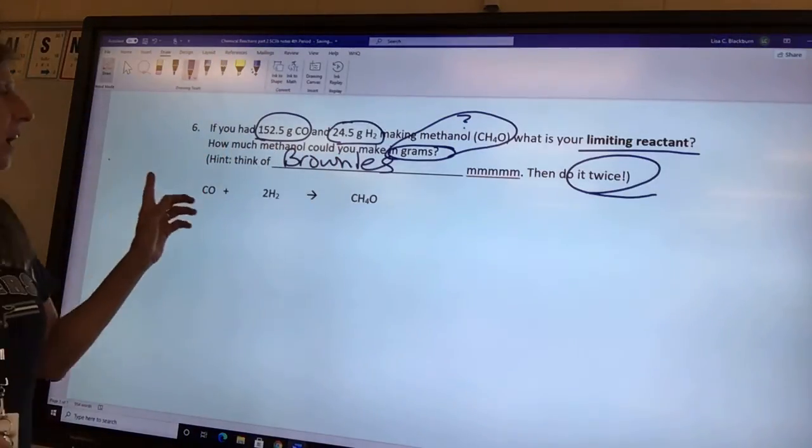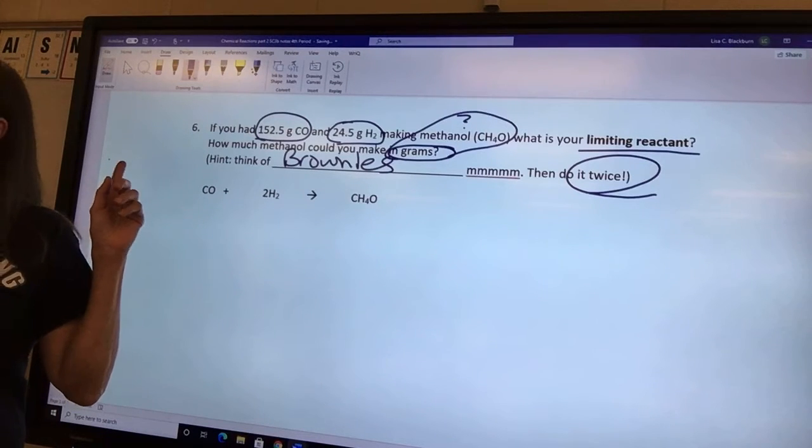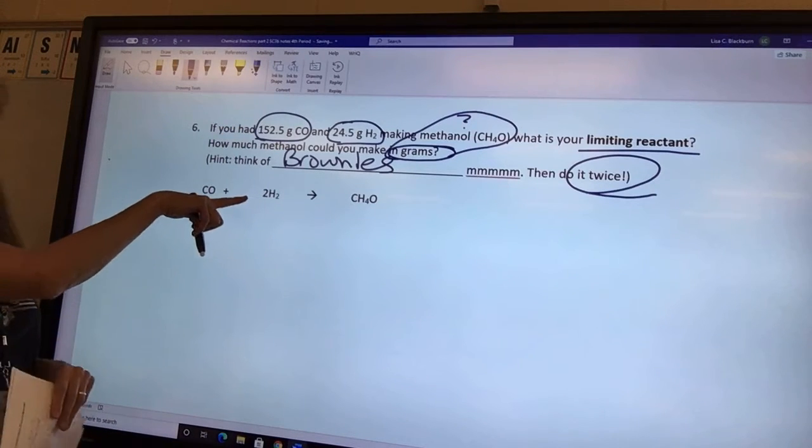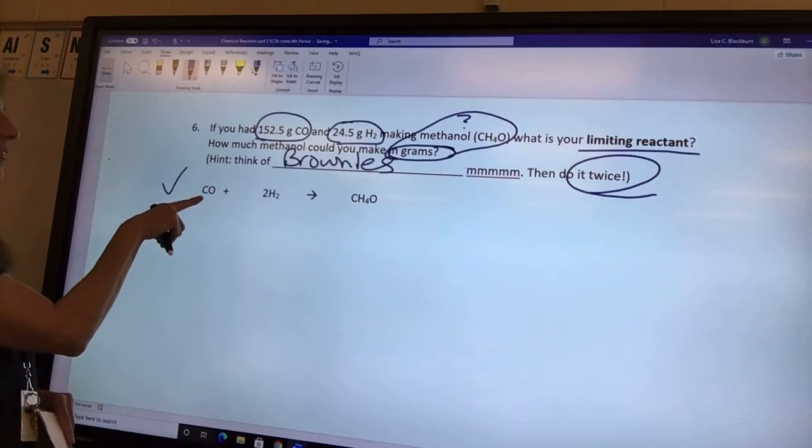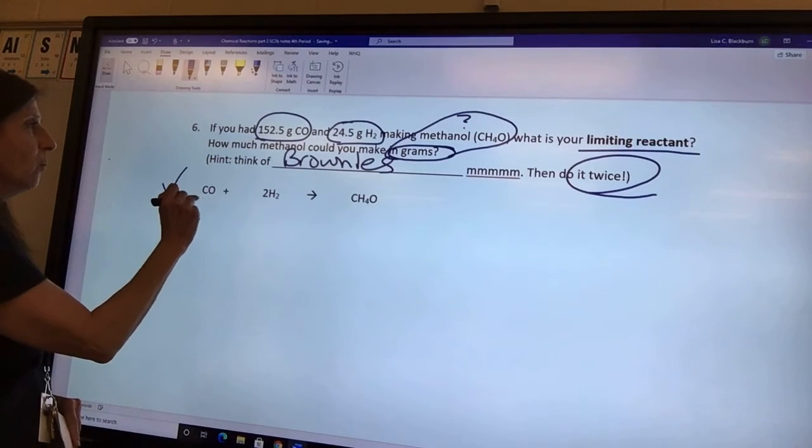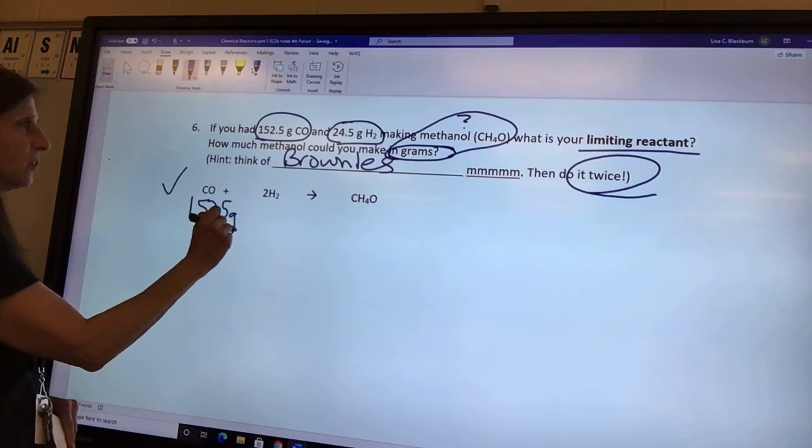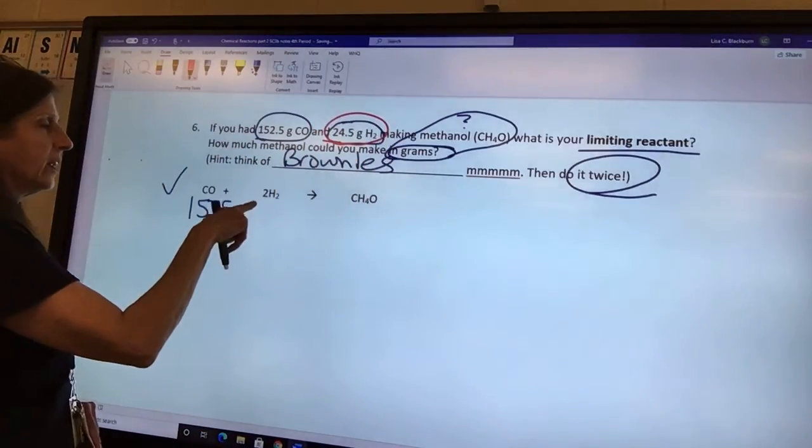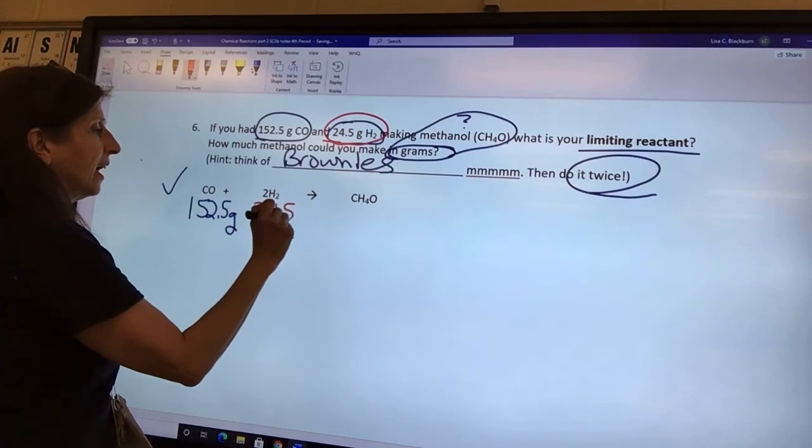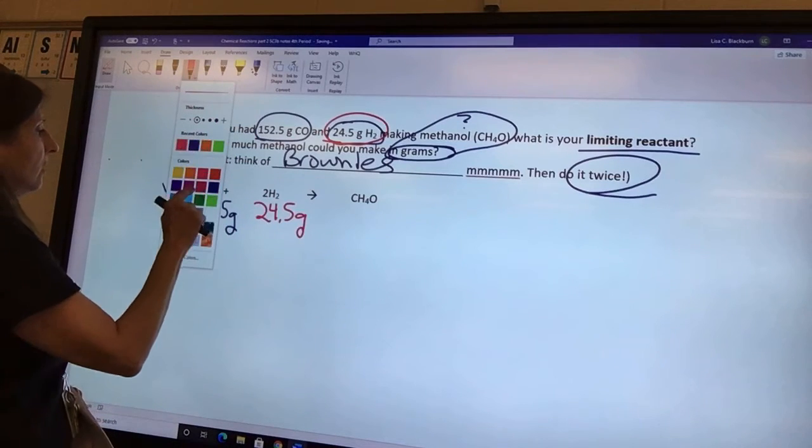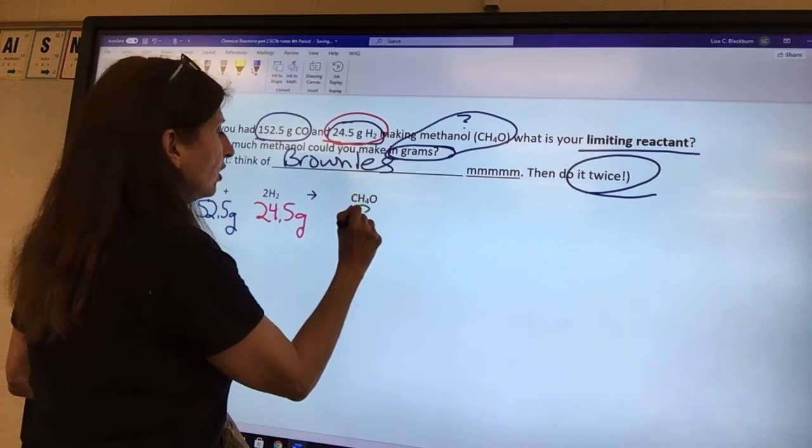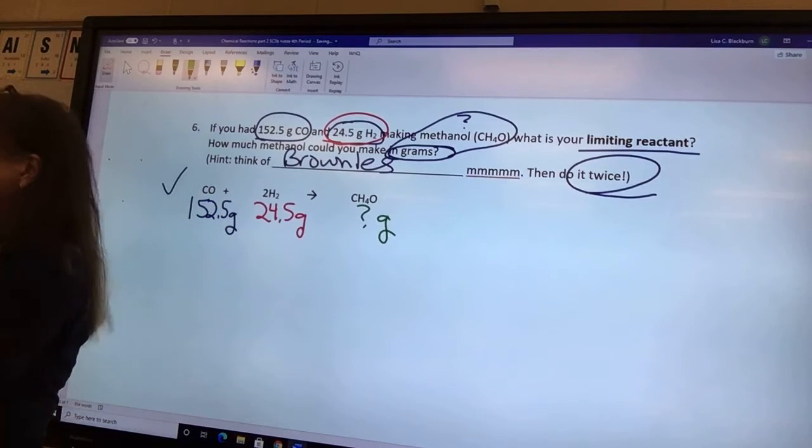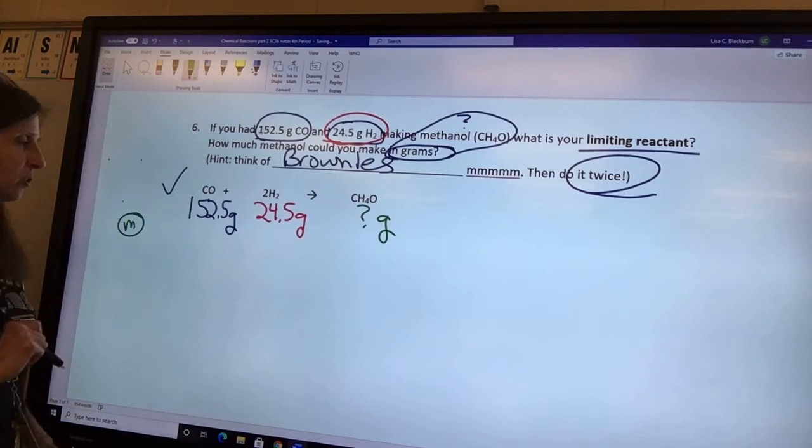Now let's do the problem. We're going to have to do it twice. So, what I'm going to do to keep this straight is use different colors. For carbon monoxide, it's going to be blue. So I'm going to write what I know under carbon monoxide in blue. 152.5 grams. I'm going to make the hydrogen pink. 24.5 grams. And what I don't know, the methanol is going to be green. Question mark grams. Now I have grams. So what do I need next? The molar masses.